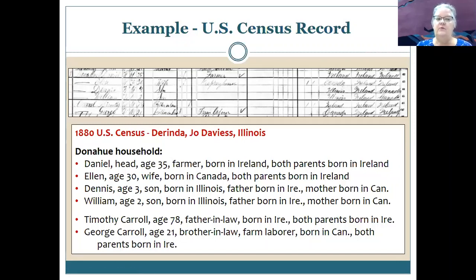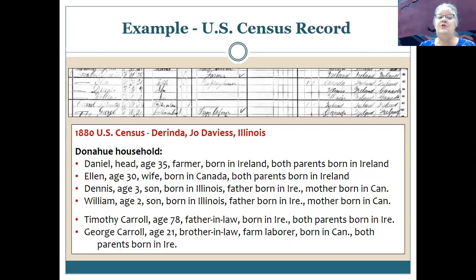Here's the Donahue household: Daniel is head of household, age 35, born in Ireland with both parents born in Ireland. His wife Ellen is 30, born in Canada but both her parents were Irish immigrants. They have two children: Dennis, age three, and William, age two, both born in Illinois. Interestingly, also listed are Timothy Carroll, age 78, and George Carroll, age 21 — revealing Ellen's maiden name as Carroll, and identifying her father and brother living in the household.